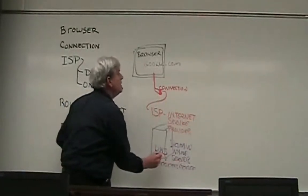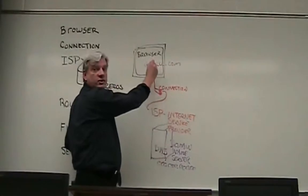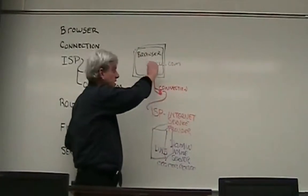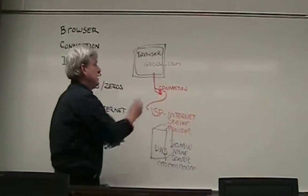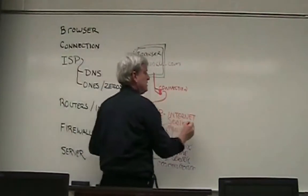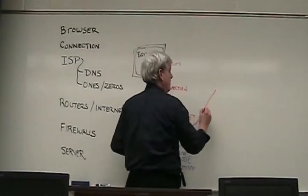This number then goes back to your browser, and your browser sends a second request, again, through the connection, through the ISP. And this time, it skips the DNS, and it goes out on the web or on the internet.